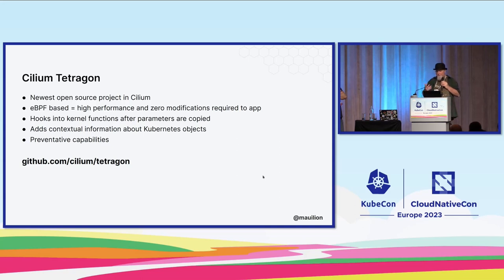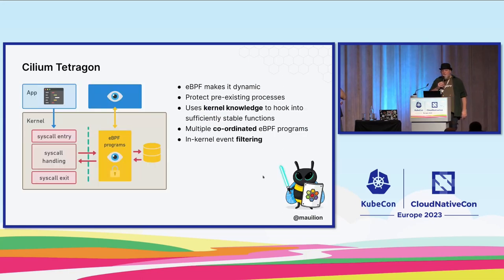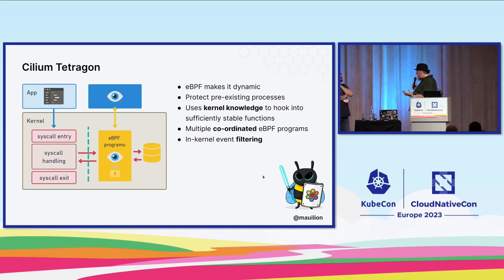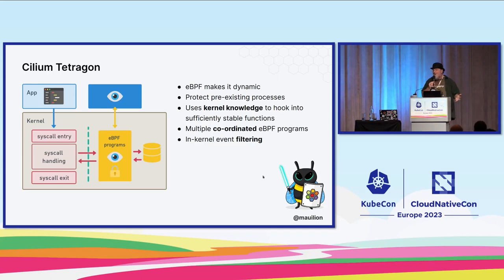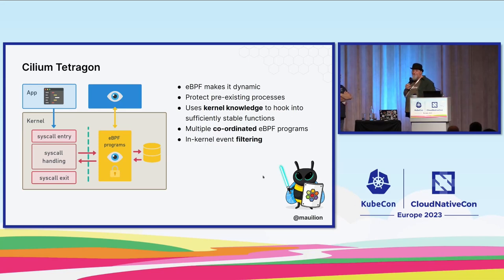If you want to know more about Tetragon, you can go to github.com/cilium/tetragon. With Cilium Tetragon, eBPF makes it dynamic. One of the other ways to solve the setuid problem is an older Linux technology called seccomp — secure computing. With seccomp, you have to associate that process with the seccomp policy before the process starts — you can't dynamically change it. If you want to modify the seccomp policy, you have to restart that process. But in eBPF that's not the case — it's an eBPF program that I inject into the Linux kernel dynamically.